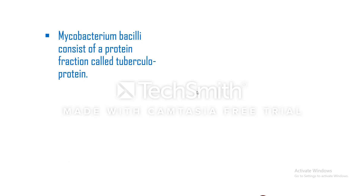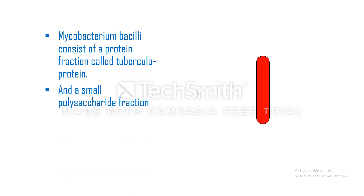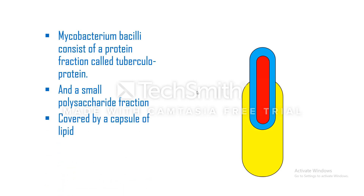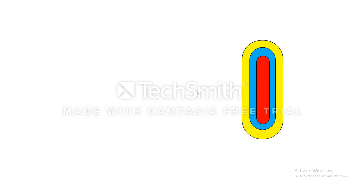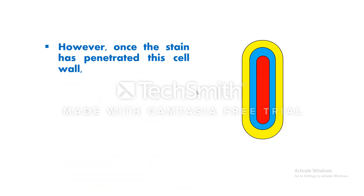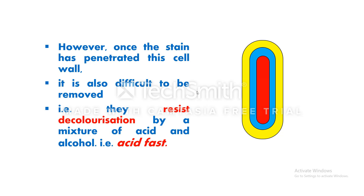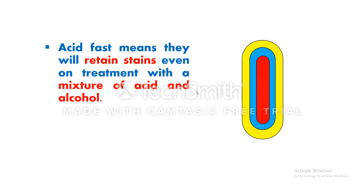Mycobacterium bacilli consist of a protein fraction called tuberculoprotein, a small polysaccharide fraction, and are covered by a capsule of lipid and wax. Mycobacterium have a unique waxy cell wall composed of mycolic acid, which makes it difficult to stain with Gram stain. However, once the stain has penetrated the cell wall, it is also difficult to remove, and they resist decolorization by a mixture of acid and alcohol, making them acid-fast.